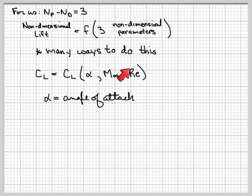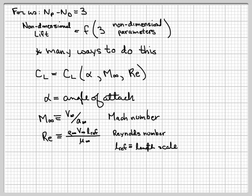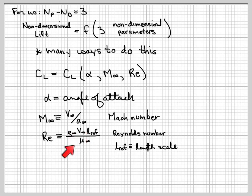The Reynolds number is the other parameter typically used. The Reynolds number is defined as the density times velocity times some reference length, divided by the viscosity. Because it has viscosity in it, the Reynolds number relates how much frictional forces will play a role. Since Reynolds number is inversely proportional to viscosity, the larger the viscosity, the smaller the Reynolds number. If viscosity is very small — meaning very small viscous effects — then the Reynolds number is going to be very high.